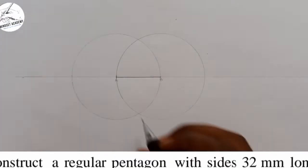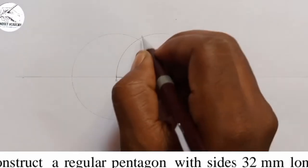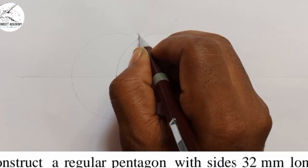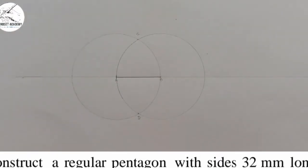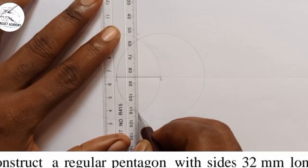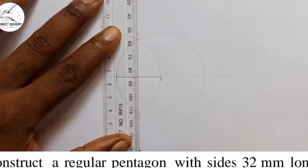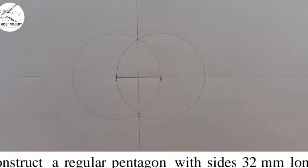Now, where the circle touches each other here, I will call it D and I will call it C. Now, draw a line that will pass through D and C. A line passing through D and C.